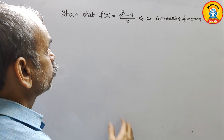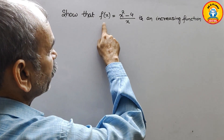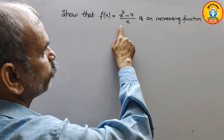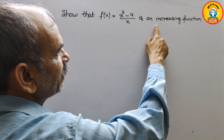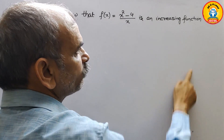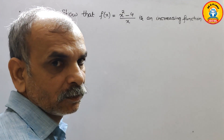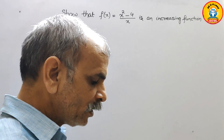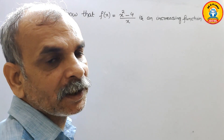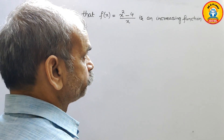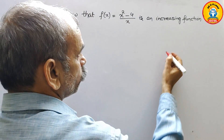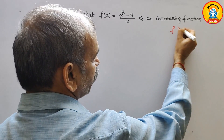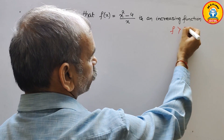The question is to show that f(x) = (x² - 4) / x is an increasing function. To show it is increasing, we have to show that f'(x) is greater than 0.